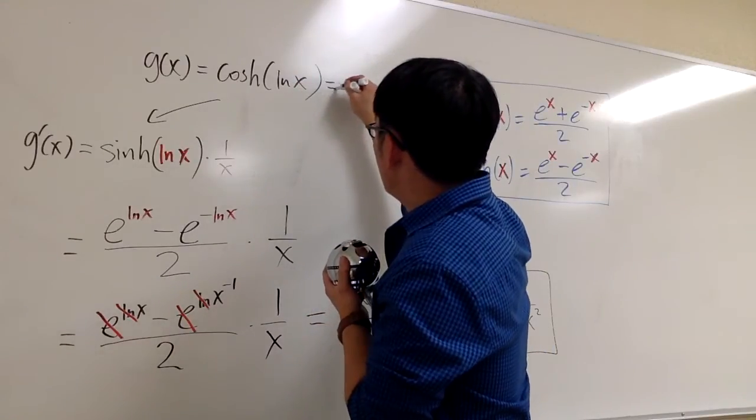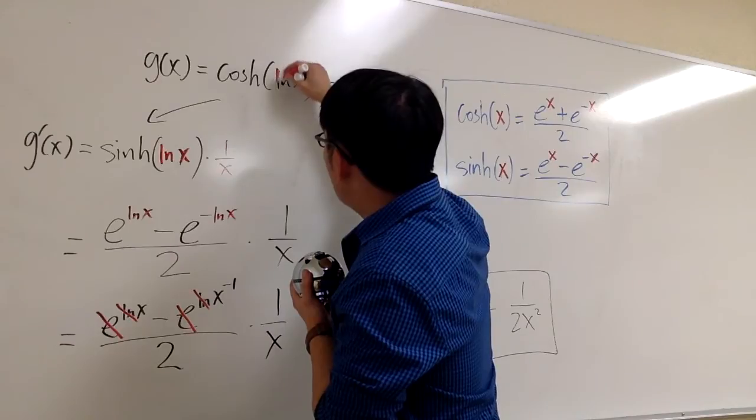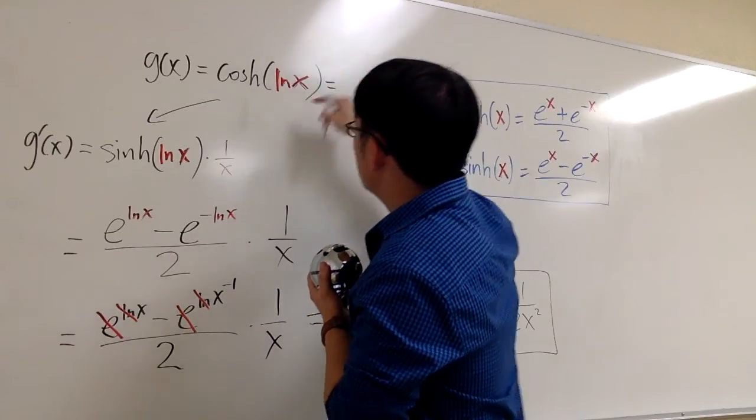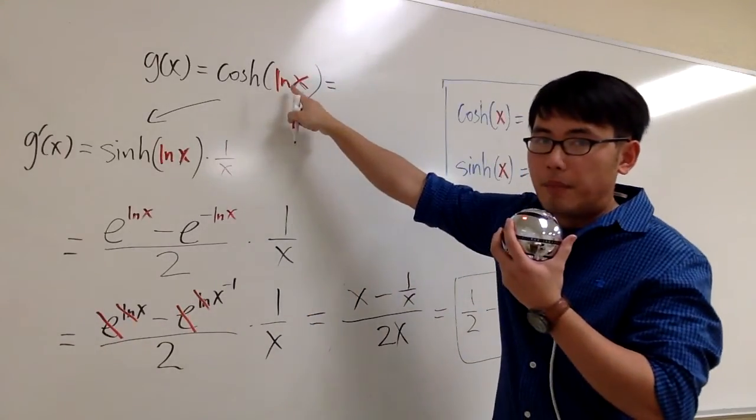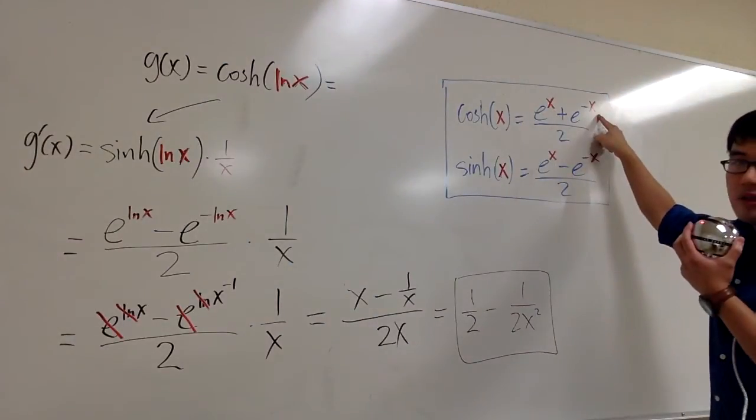We will do that. So for the second way, I'm just going to write it down right here. Cosh of ln x. This is the same as plugging ln x into all these red x right here.